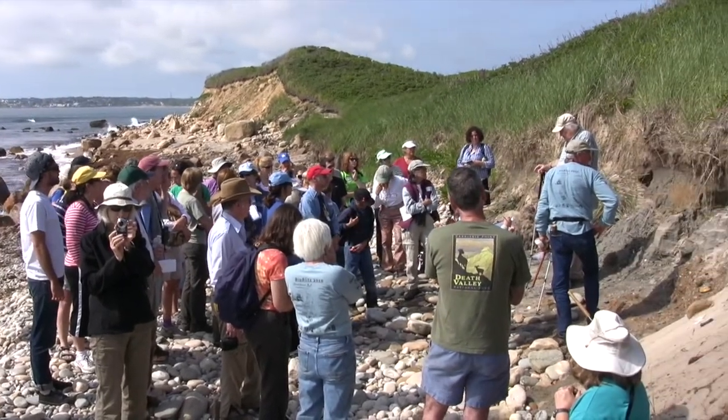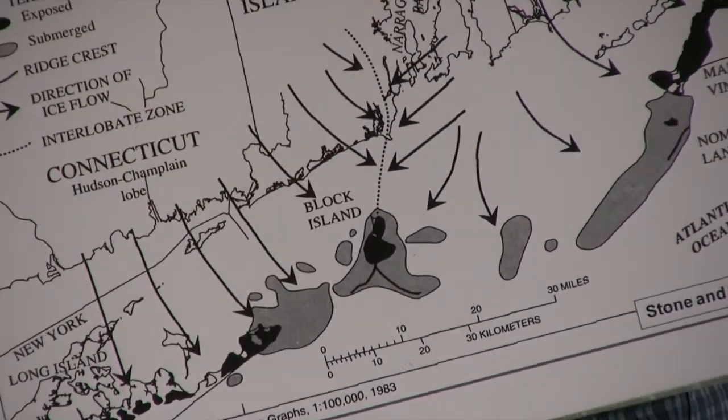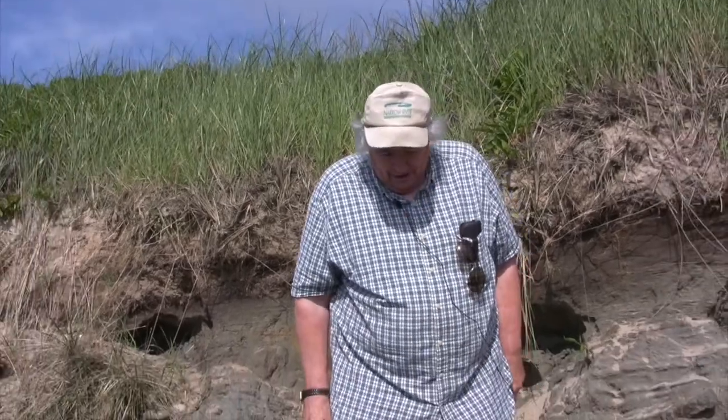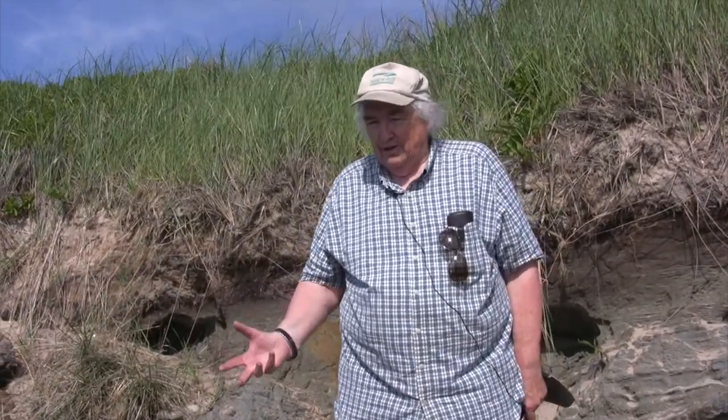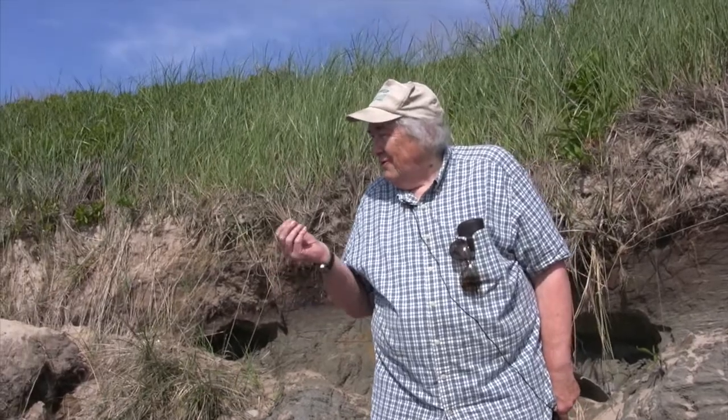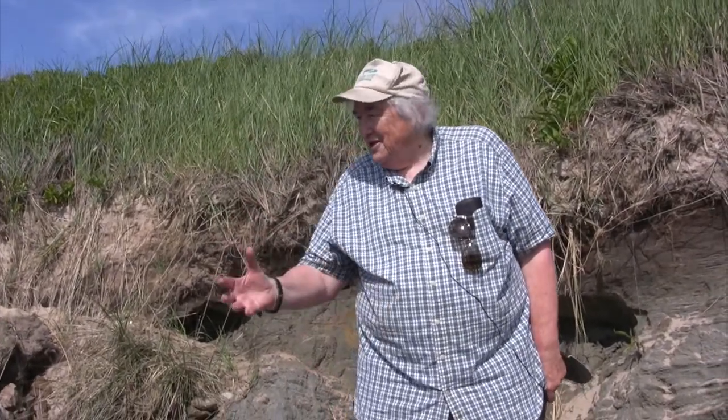Some of these — not all — are pink granite and granite gneiss. What does that mean about the source of the rocks? Which lobe? The left one — the west one. Well, that's interesting because the map showed that there ought to be a preponderance of ones from the Narragansett Basin, which should be the lobe to the east. So that's something to think about.